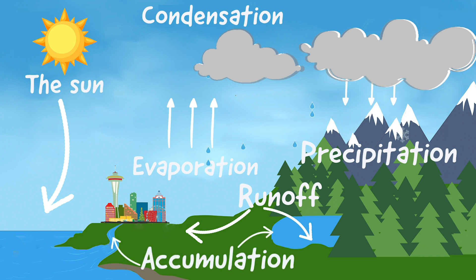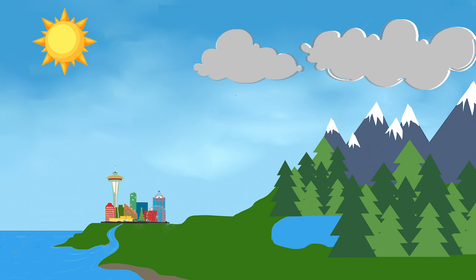Some of the runoff soaks into the ground and is then known as groundwater. And then the sun starts the cycle all over again. It's amazing!